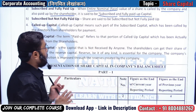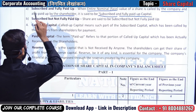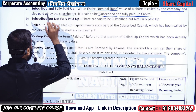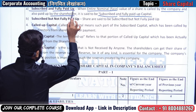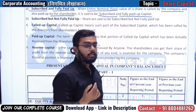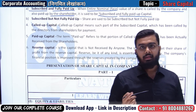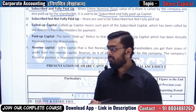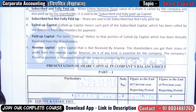So this type — subscribed and fully paid up — means that people have subscribed to the shares and have also paid the full amount that the company demanded. This is called subscribed and fully paid up.